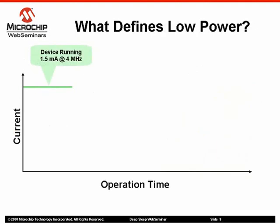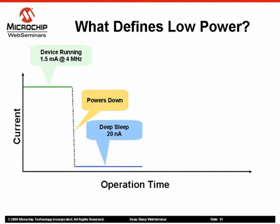This graph shows a typical low-power application actively running at 4MHz with a current consumption of 1.5mA — enough power consumption to drain a battery within a month or two. The application can execute a sleep or power-safe instruction with deep sleep enabled to power down and conserve power. While in deep sleep, the device is at its lowest power state, and with minimal features running, power consumption can be as low as 20 nanoamps.